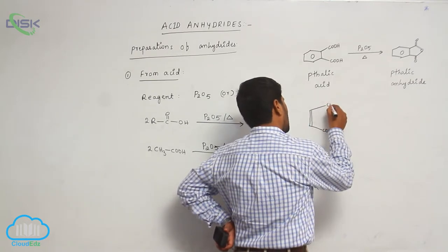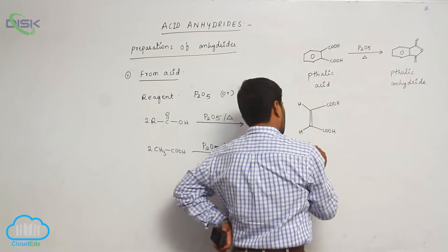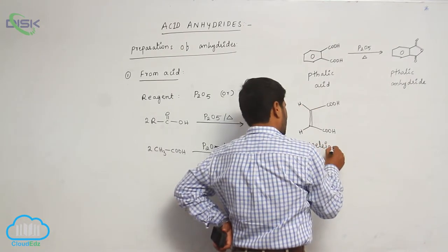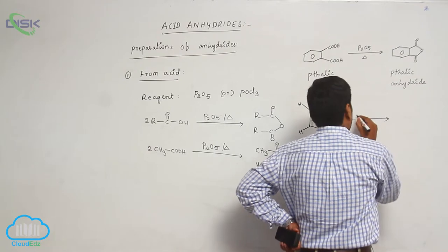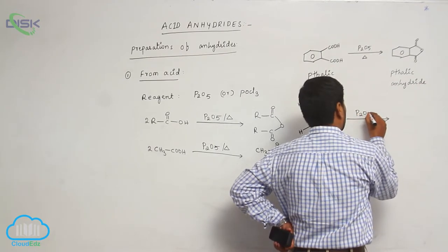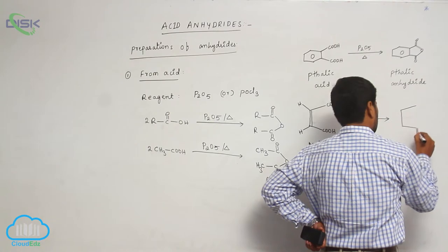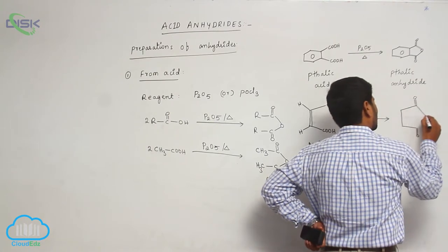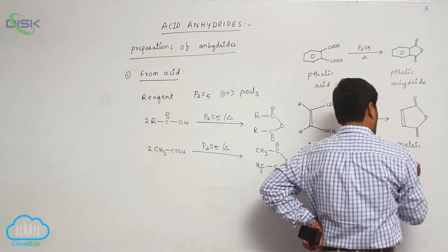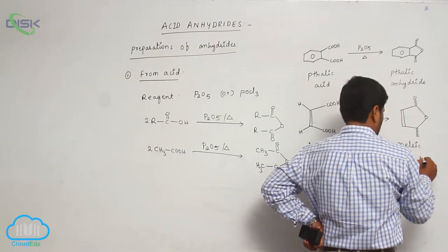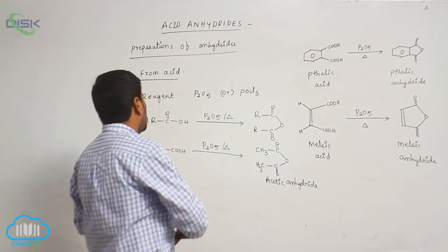Similarly, maleic acid upon heating with a dehydrating agent loses water to form maleic anhydride. This is preparation from carboxylic acid.